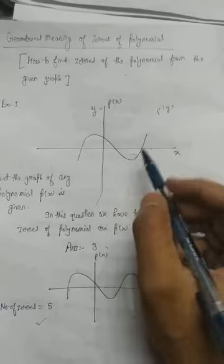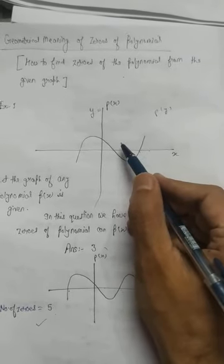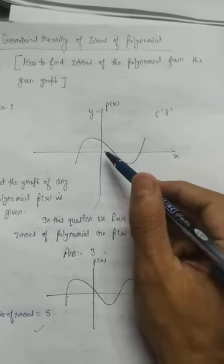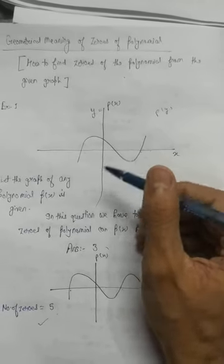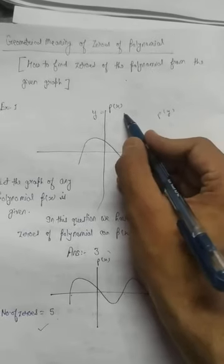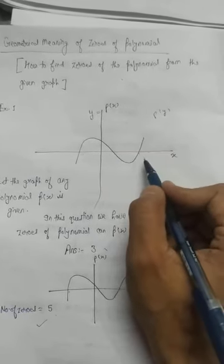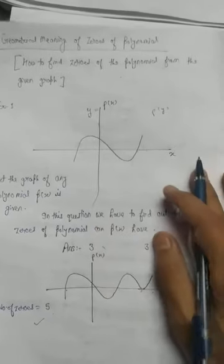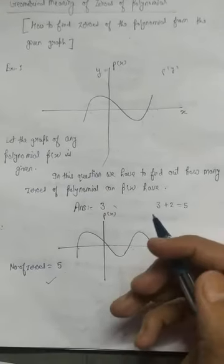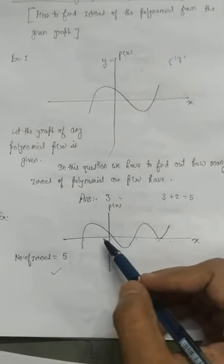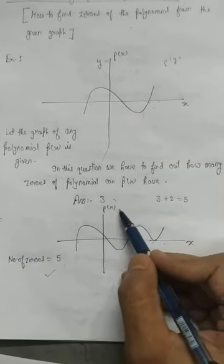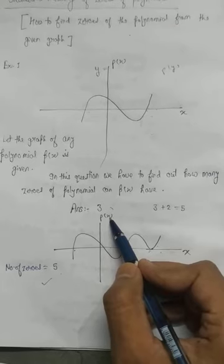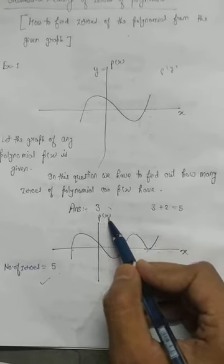You just have to see in which variable the polynomial is given and how many times the given graph intersects the x-axis or y-axis accordingly. Now let us look at another example. Again the polynomial is in x, so we will see how many times the graph intersects the x-axis.